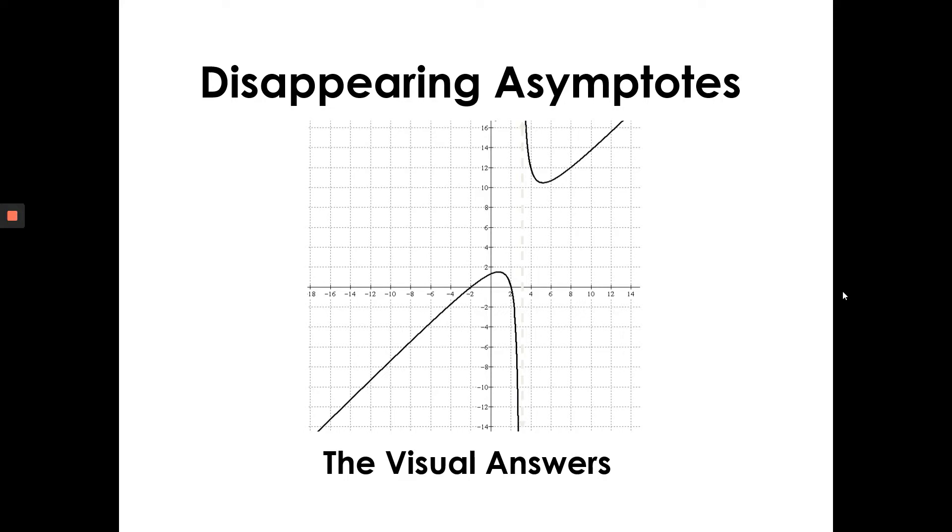And that occurs when there's a special relationship between the factors of the numerator and the factors of the denominator of the rational function. I don't want to give away too much, but the title of this PowerPoint is called Disappearing Asymptotes.